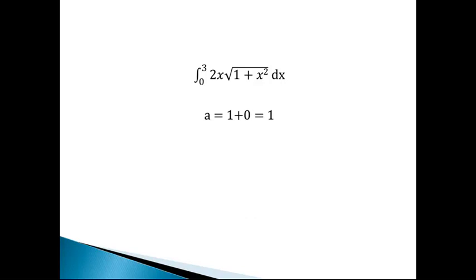then a at u is going to be 1 plus x squared at 0, which is going to be 1 plus 0 equals 1. Now, the b then becomes 1 plus 3 squared, which is 10.